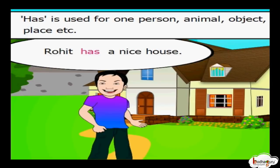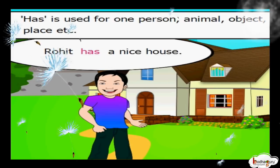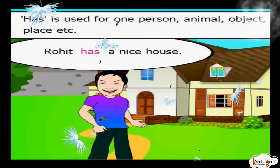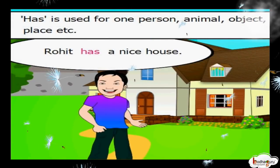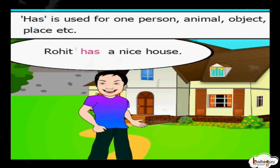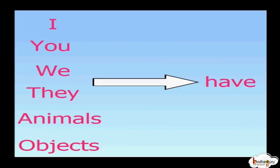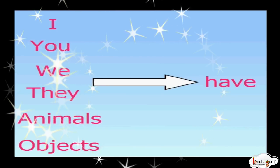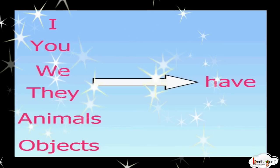Rohit has a nice house. 'Has' is used after the name of one person, or one animal, or one object, or one place — that is a singular noun. Rohit is the name of a person, so we used 'has', not 'have'. 'Have' is used with I, we, you, they, or when we are talking about many things, animals, persons or places — that is plural noun.